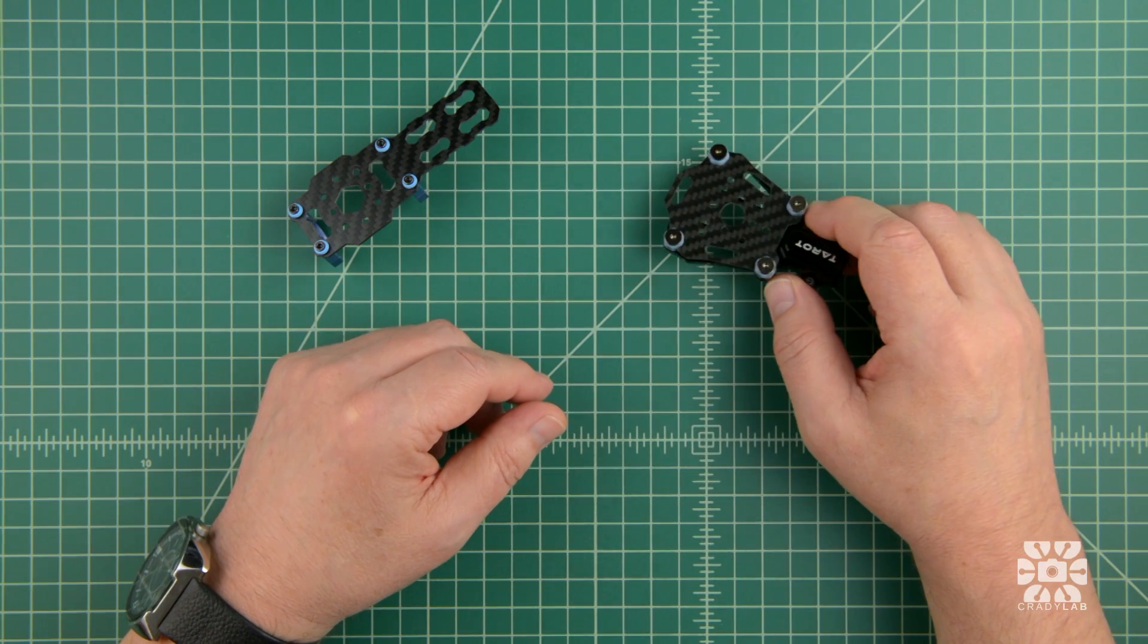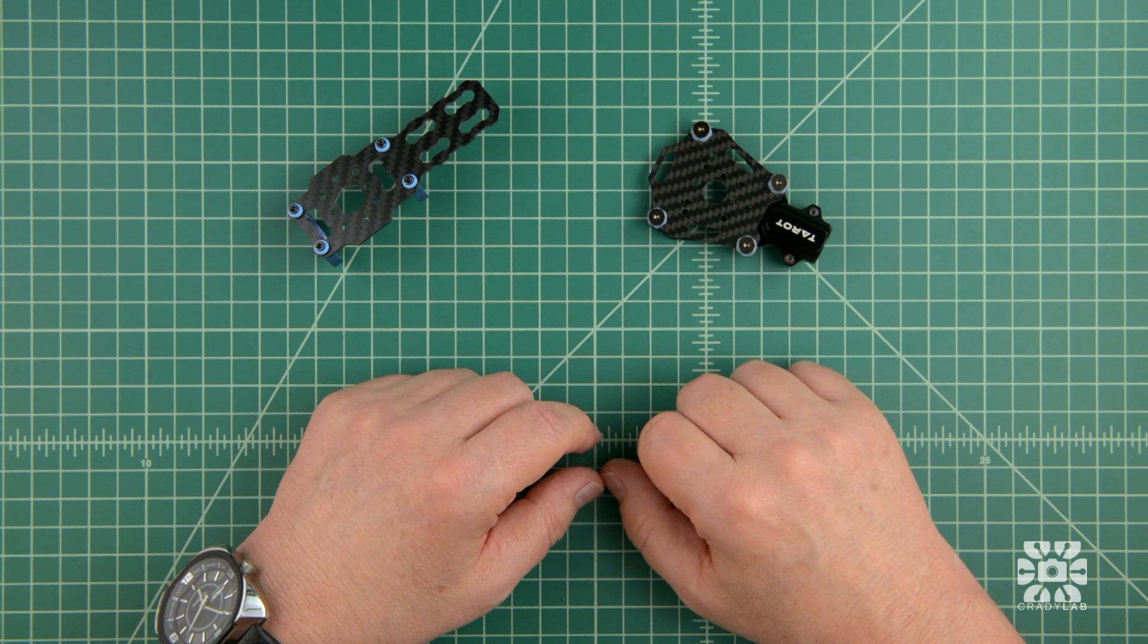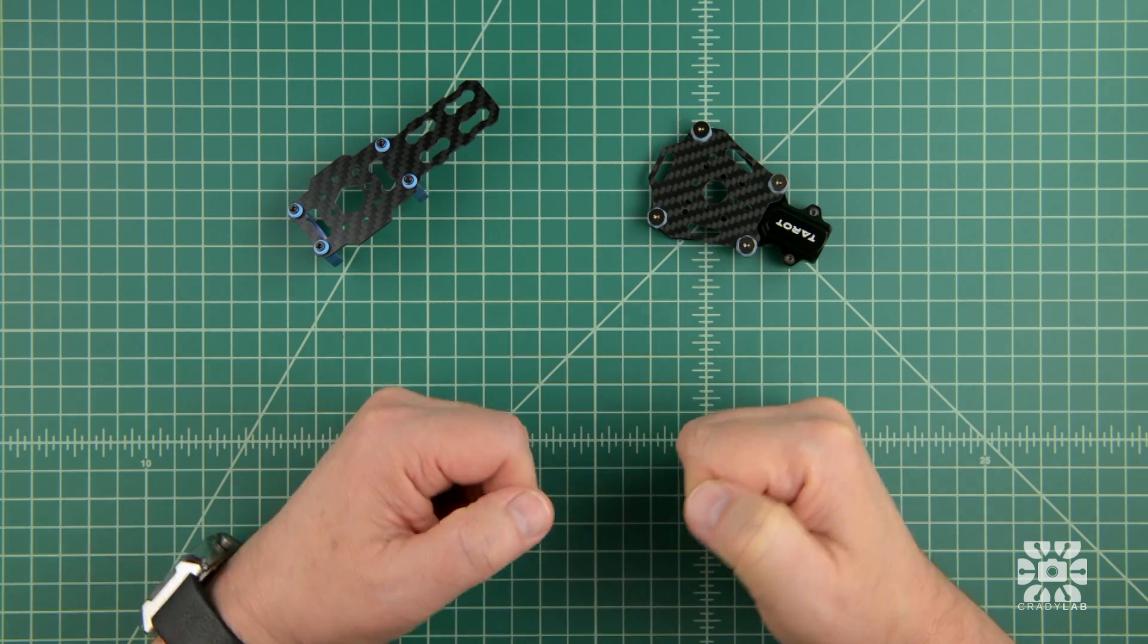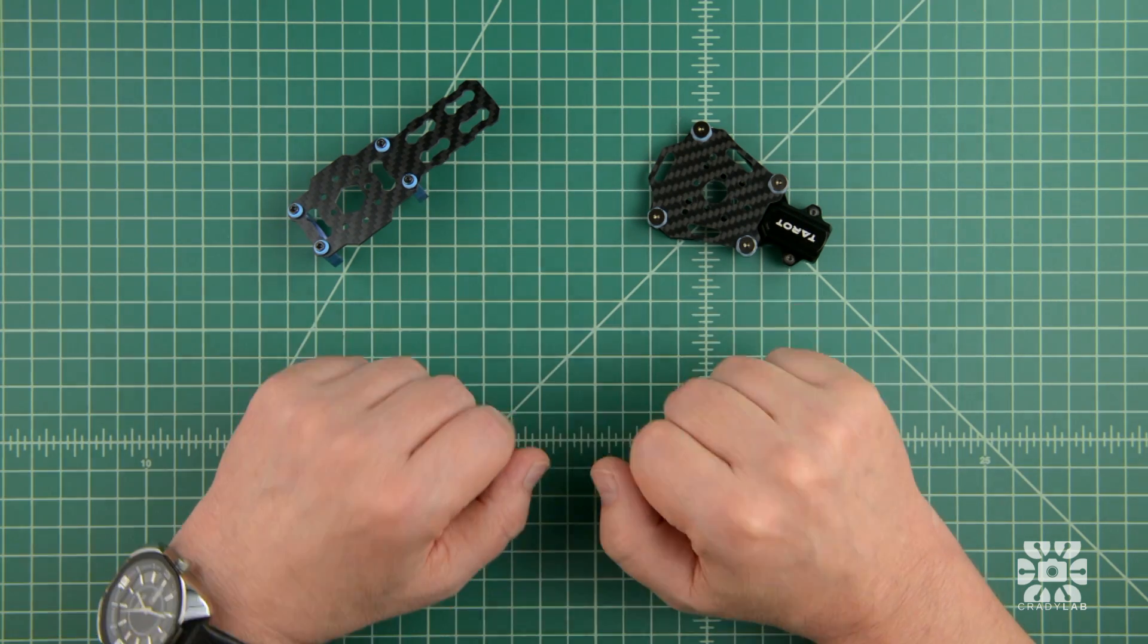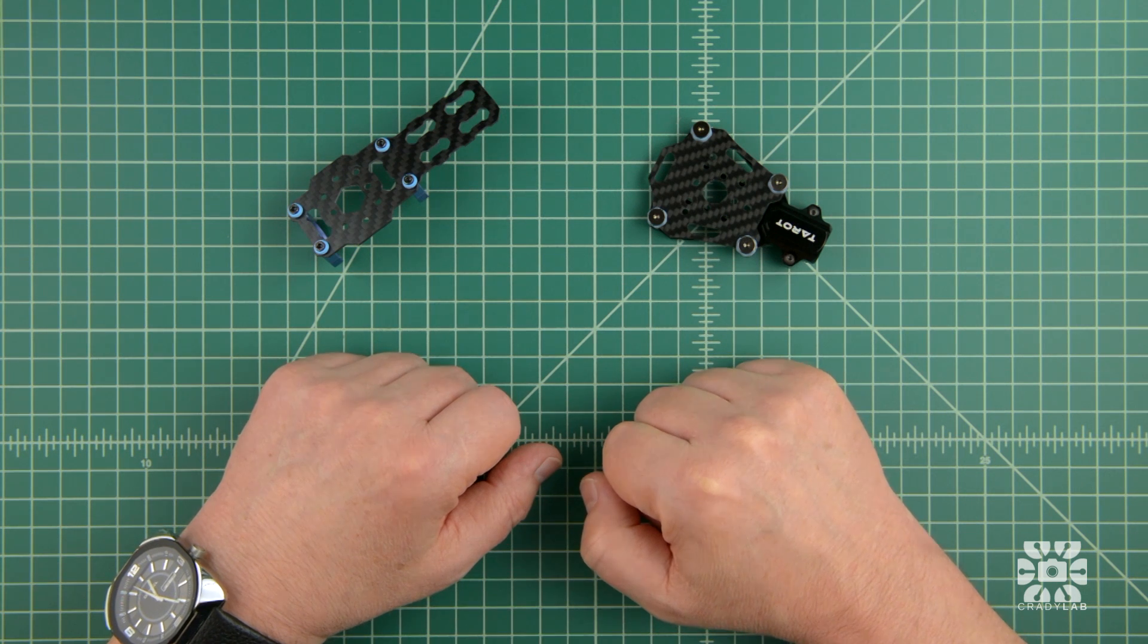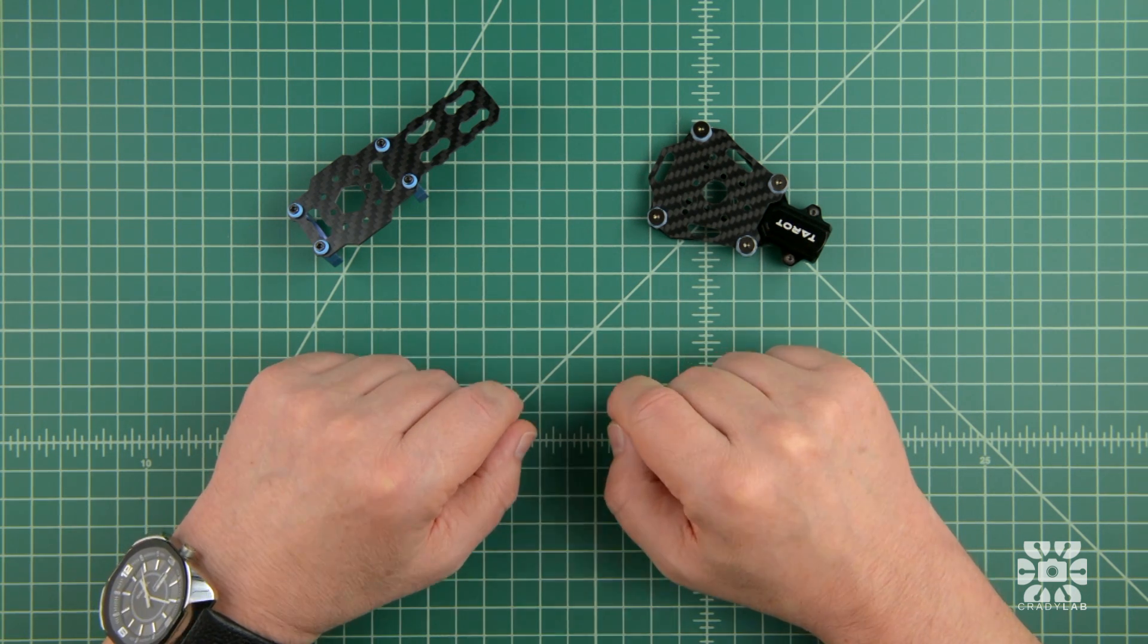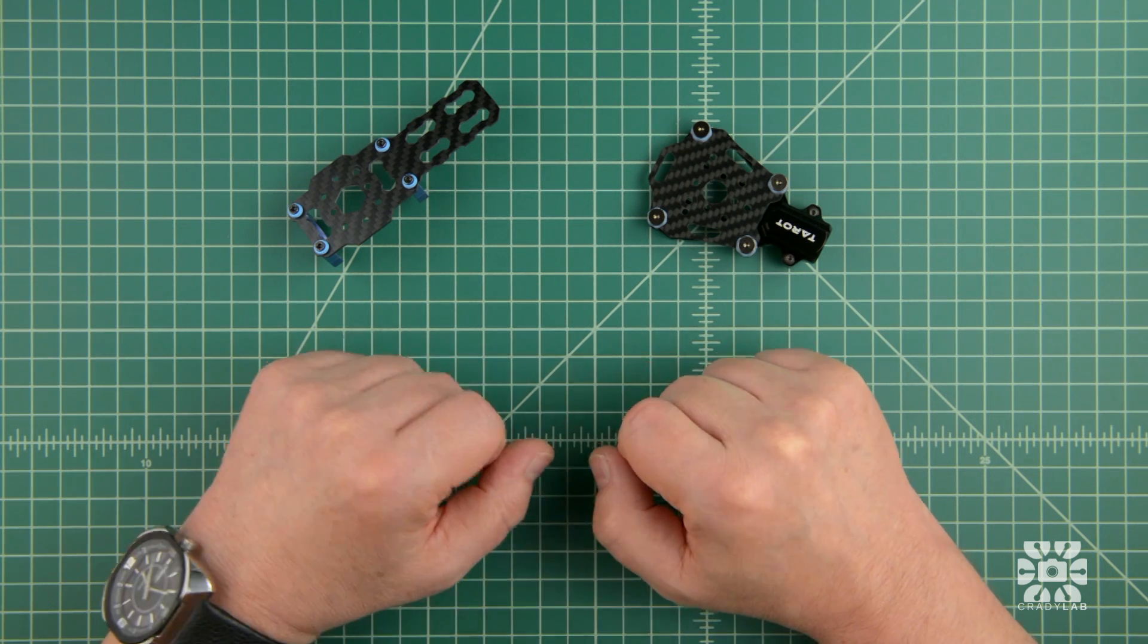But all this data collection got me wondering, how much does a propeller shape and material contribute to vibration? Now, I really like the APC props. They're durable, they're consistent, and they're inexpensive, and I want to know how they stack up when compared head-to-head with the similarly sized carbon fiber props I happen to have on hand. So just to reiterate, I'm going to use the same test rig with the same motor and rigid mount, and all four props and their hubs have been perfectly balanced.